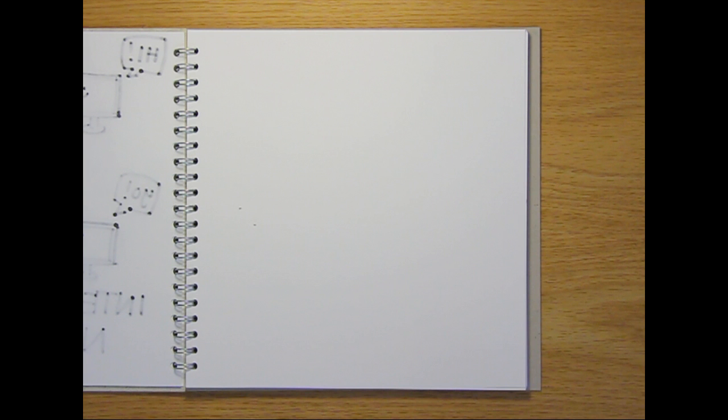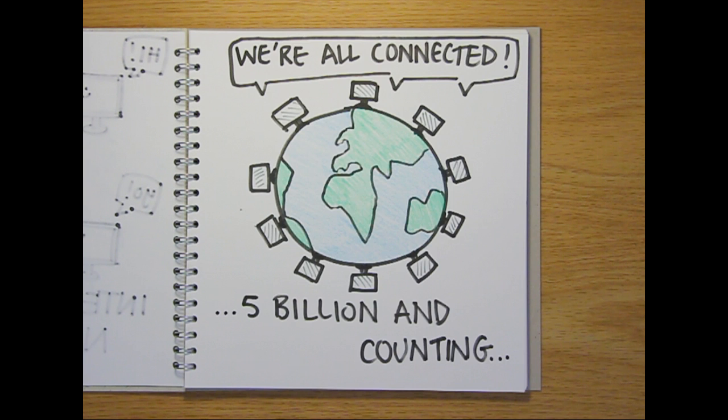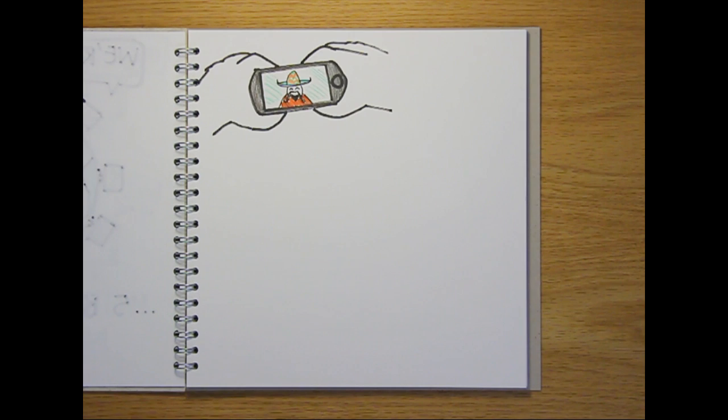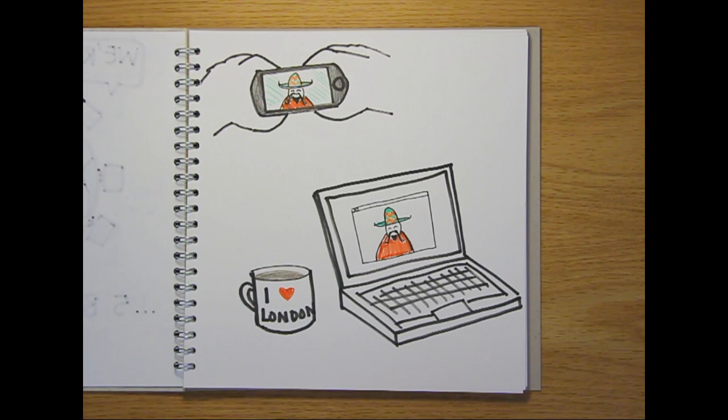In reality, the internet is made up of billions of computers and devices all over the world that are all interconnected. Which means that a photo taken on an iPhone in Mexico can be on a laptop in London just a second or so later. To make this happen, we need three key things.